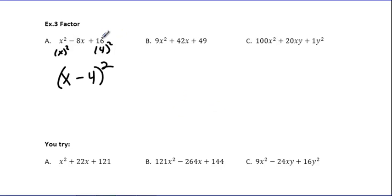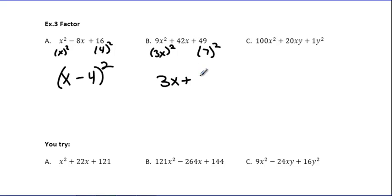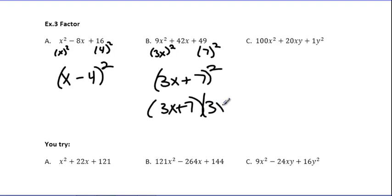AC factoring is probably something you're still struggling with, so knowing Perfect Square Trinomials could save some work. For 9x² plus 42x plus 49: this is (3x)² and that's 7². Now check the middle term: 3x times 7 is 21x, and if I double 21, I get 42. This works. It's a plus sign, so I write (3x plus 7)², or equivalently (3x plus 7)(3x plus 7). Notice that the sign in the middle of the trinomial matches the sign inside the factored form.